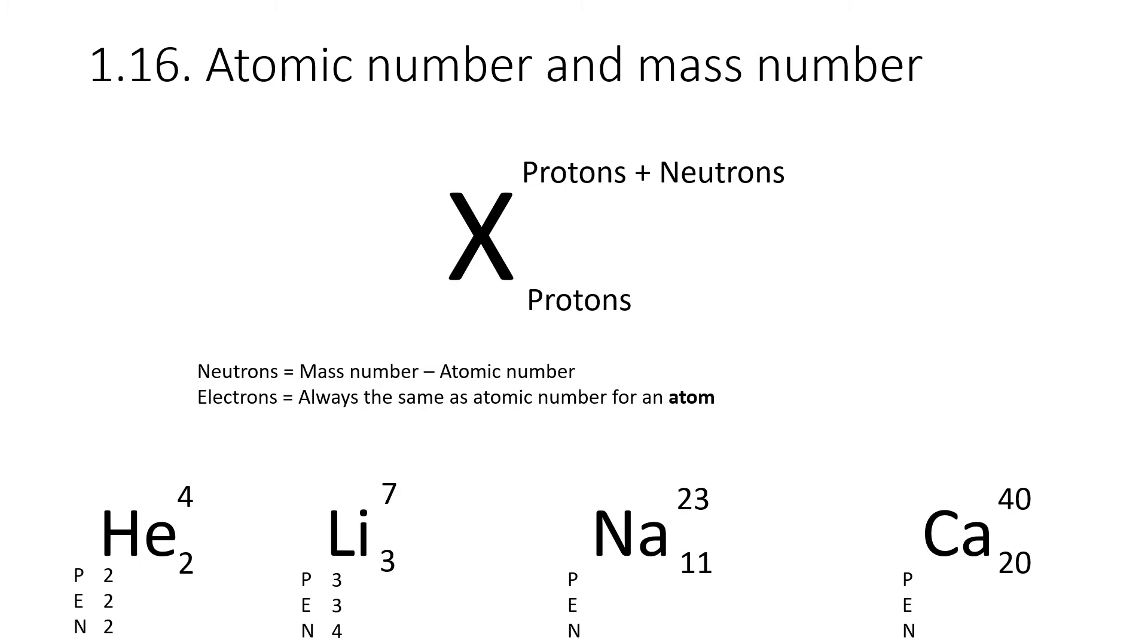Two more examples. Feel free to pause the video and have a try. Na is for sodium. Its mass number is 23, and its atomic number is 11, which means it has 11 protons. It will have 11 electrons, therefore. And 23 take away 11 is 12, so it has 12 neutrons. Finally, Ca, calcium. Its mass number is 40, and its atomic number is 20. So, it's got 20 protons, 20 electrons, and 40 take away 20, which is also 20 neutrons.